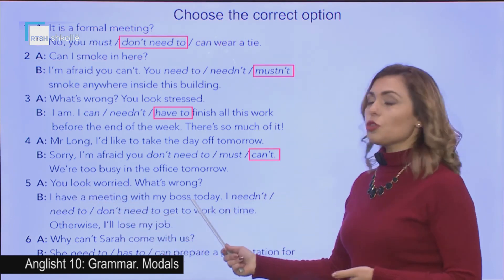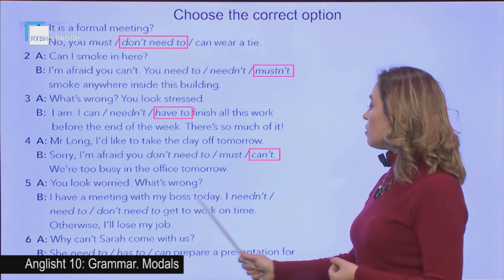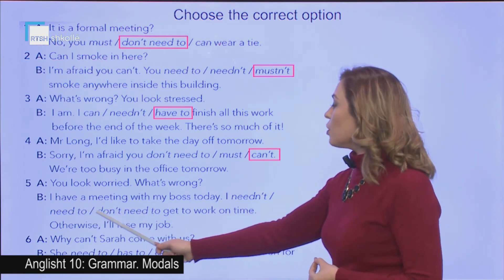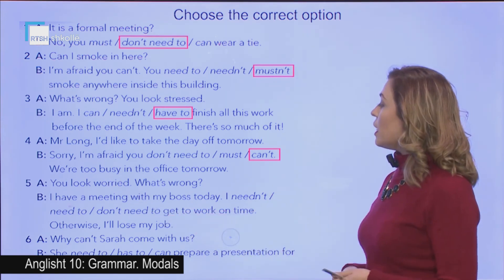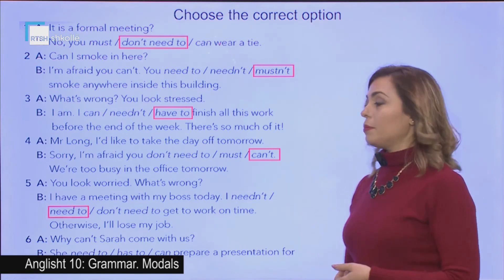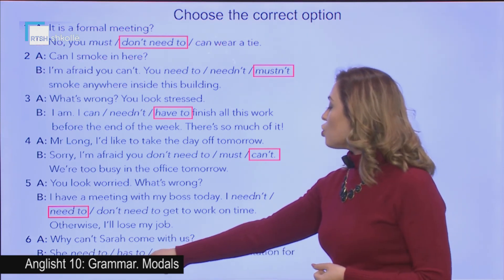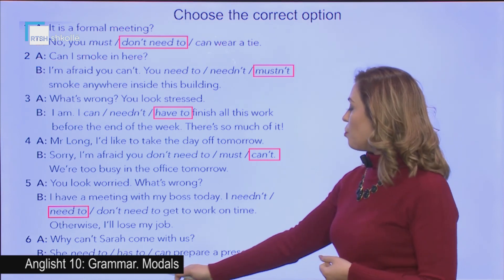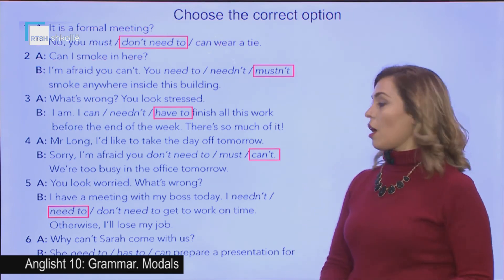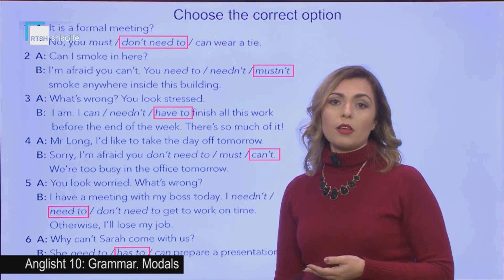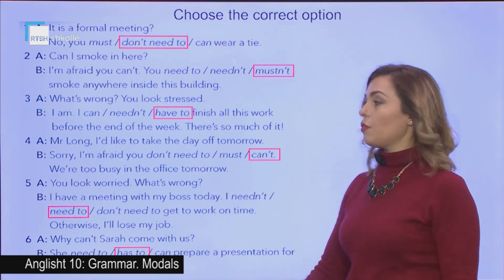Number five: 'You look worried. What's wrong?' 'I have a meeting with my boss today. I ___ get to work on time.' Since I am really worried, it means that I need to be on time. Number six: 'Why can't Sarah come with us?' 'She needs to prepare a presentation for her boss.' She cannot come with us because she has to prepare — there is an obligation she has for the boss. And that was the end of this exercise.